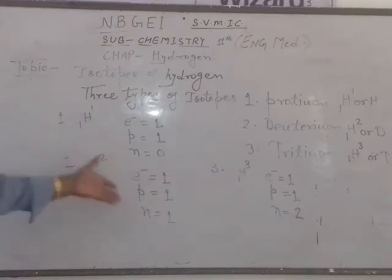So there are 3 types of isotopes of hydrogen.